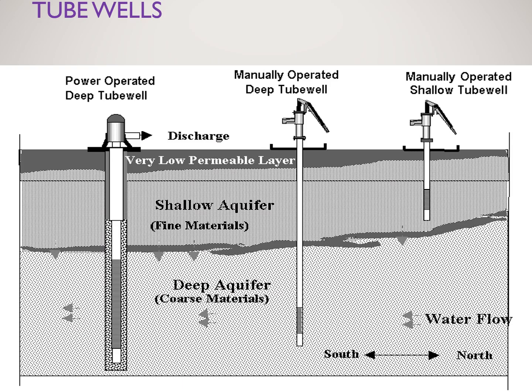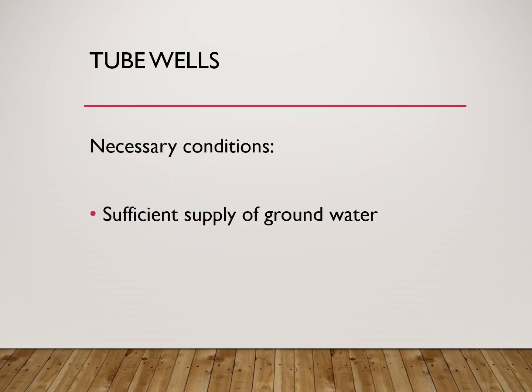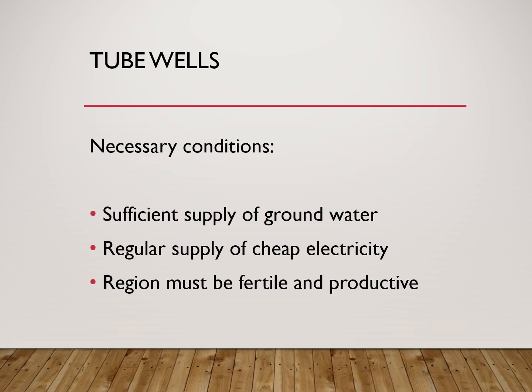Another modern method of irrigation is tube wells. As you can see, these are bore wells dug inside the earth that pull water through electric motors and transfer it to fields. Conditions required for tube wells: there should be sufficient supply of groundwater, the groundwater table should be high, electricity should be supplied regularly and cheaply, and the region around the tube wells must be fertile and productive, otherwise it is a waste of water and crops may not grow well.